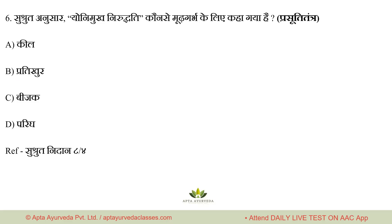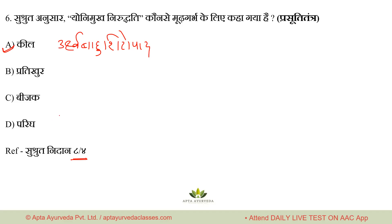Question number 6: According to Sushruta, Yonimukhanirudhiti (obstruction of vaginal opening) is said to be a feature of which type of Mudagarbha? First, there are four types of Mudagarbha. Options: A. Keel, B. Pratikur, C. Beejakam, D. Parigha. Reference: Sushruta Nidana 8/4. The right answer is option A — Keel. Keel's features include: Urdhva Bahu, Shiropad — and in modern terms, Keel is also called Sankeel — chest, back and side presentation.